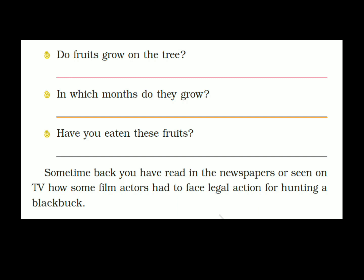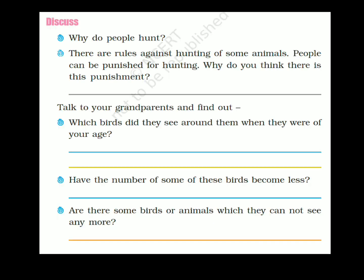Let's discuss why people hunt. People hunt animals for skin, meat, and bones. In ancient times, people also hunted animals for recreation, which is morally wrong. There are rules against hunting of some animals and people can be punished for it. Due to excessive hunting, some species such as the black buck and tiger are on the verge of extinction. The government has set rules against hunting, but some people ignore these rules and illegally hunt animals. There should be appropriate punishment to stop such people.